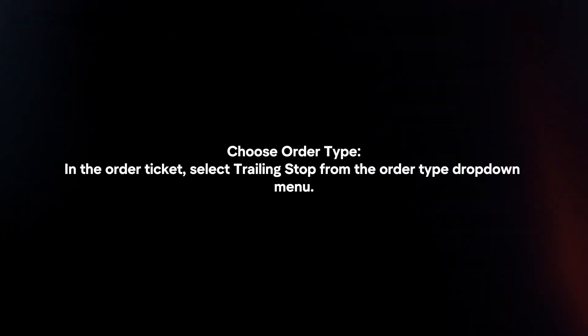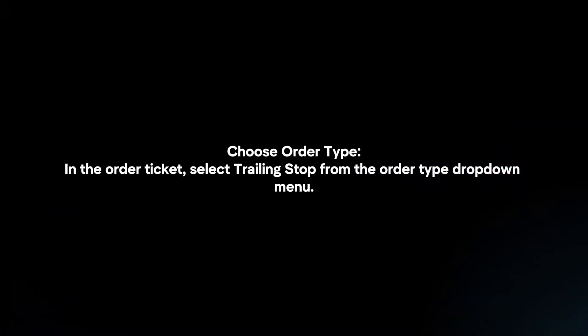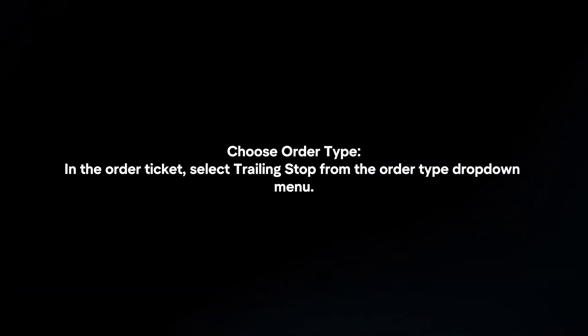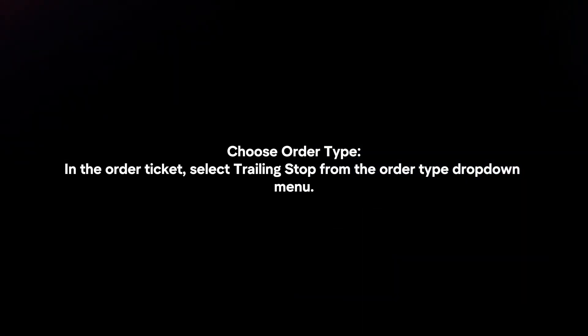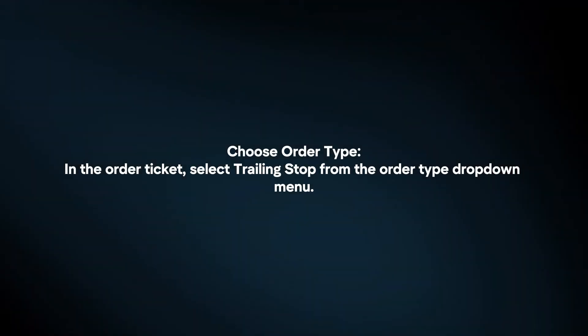Choose Order Type. In the order ticket, select Trailing Stop from the Order Type drop-down menu.